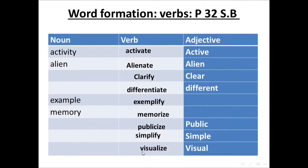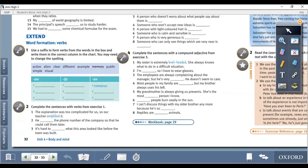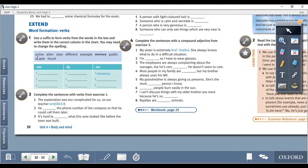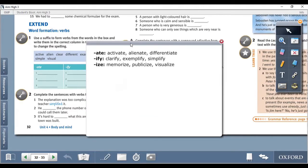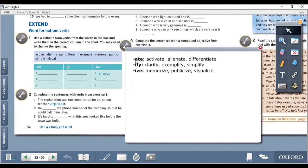Now again we want to go to the student book and do the exercises there. Number one, in this exercise we want to fill in the column with the correct verbs. The verbs that we added -ate: activate, alienate, differentiate. The verbs ending in -ify: clarify, exemplify, simplify. The verbs ending in -ize: memorize, publicize, simplify, visualize.